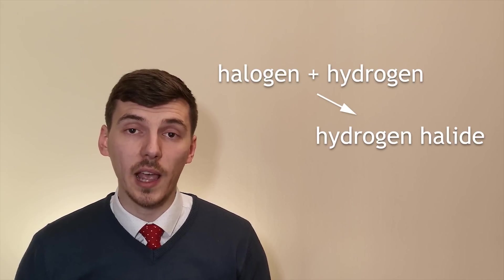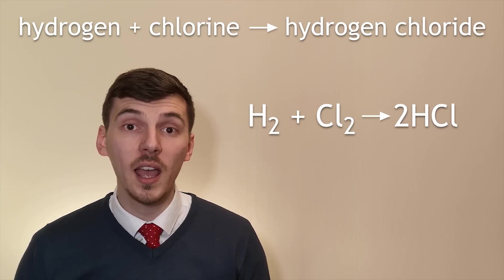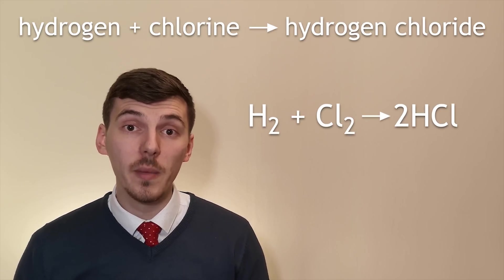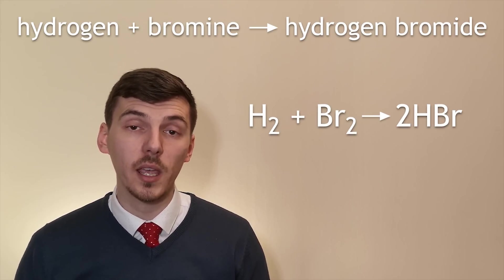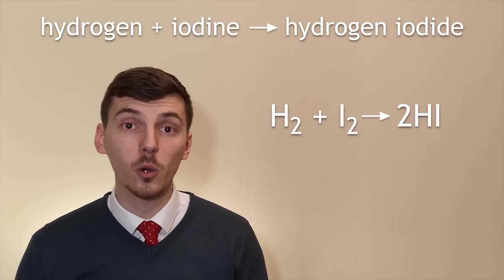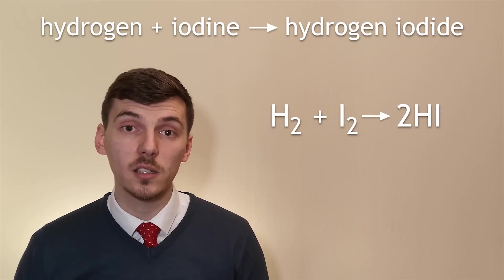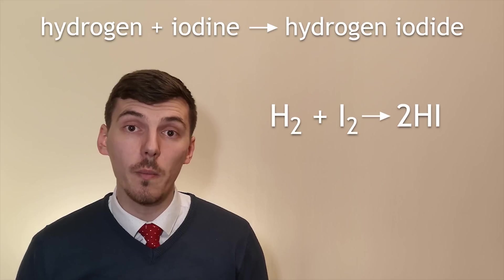The group 7 elements can also react with hydrogen. Hydrogen can react with chlorine to make hydrogen chloride and when dissolved in water makes hydrochloric acid. We can also react hydrogen with bromine to make hydrogen bromide and when dissolved in water makes hydrobromic acid. We can also do the same thing with iodine to make hydrogen iodide and that too when dissolved in water will make an acid.